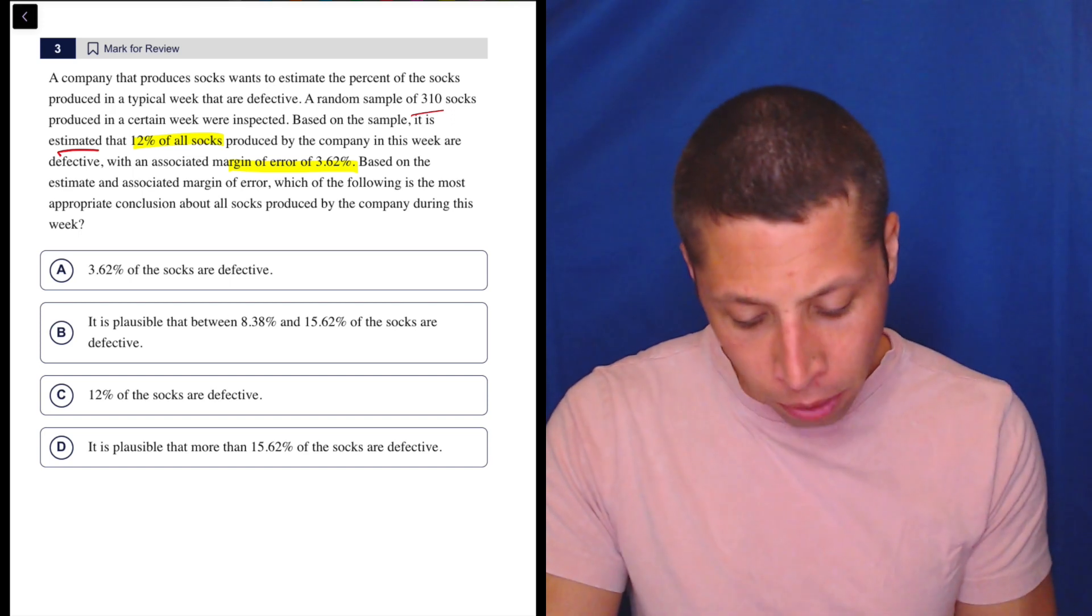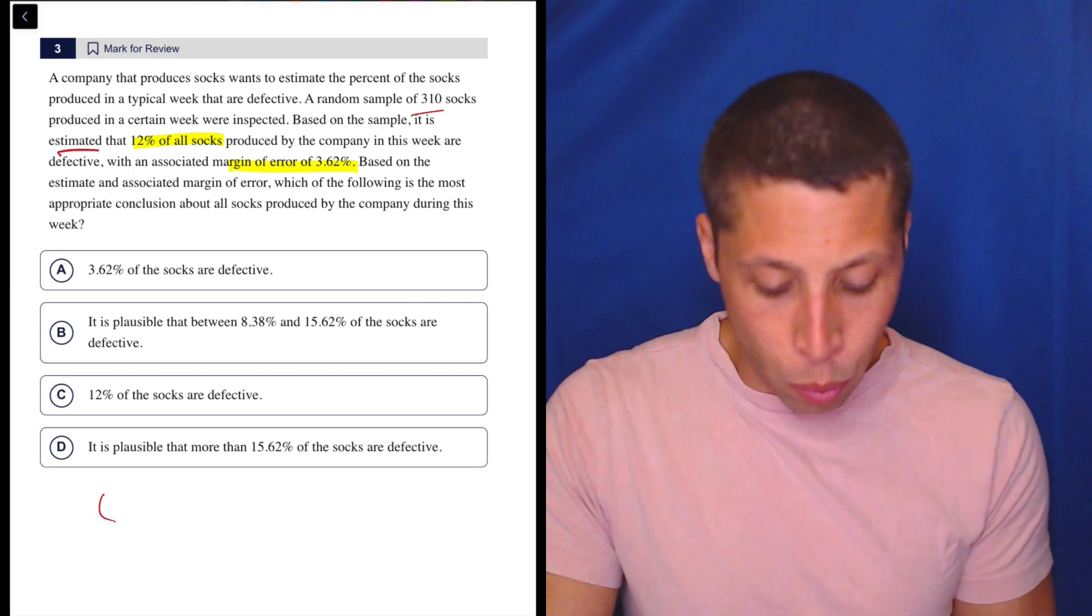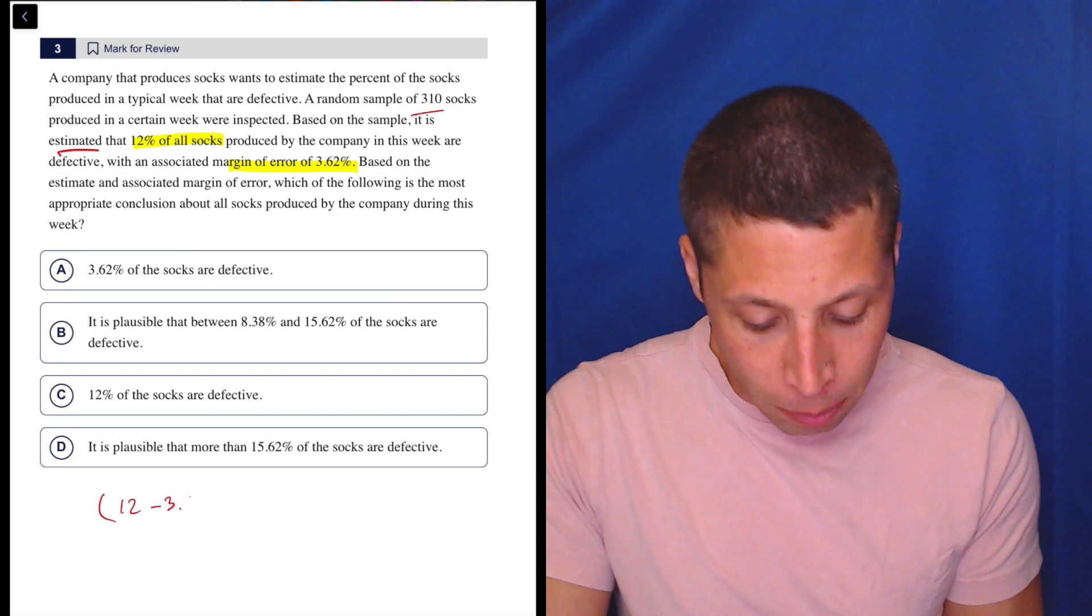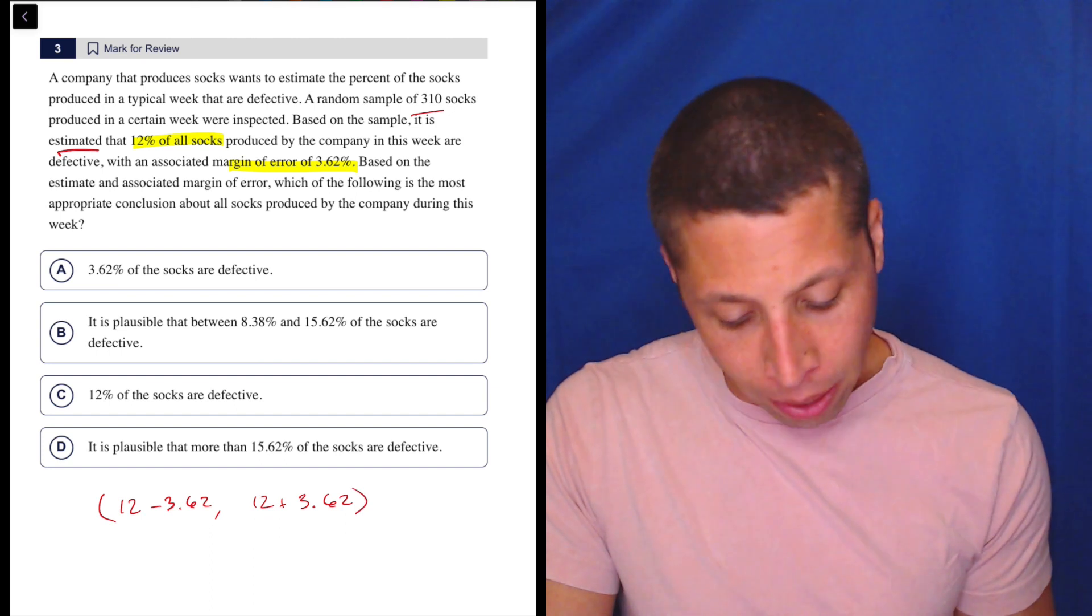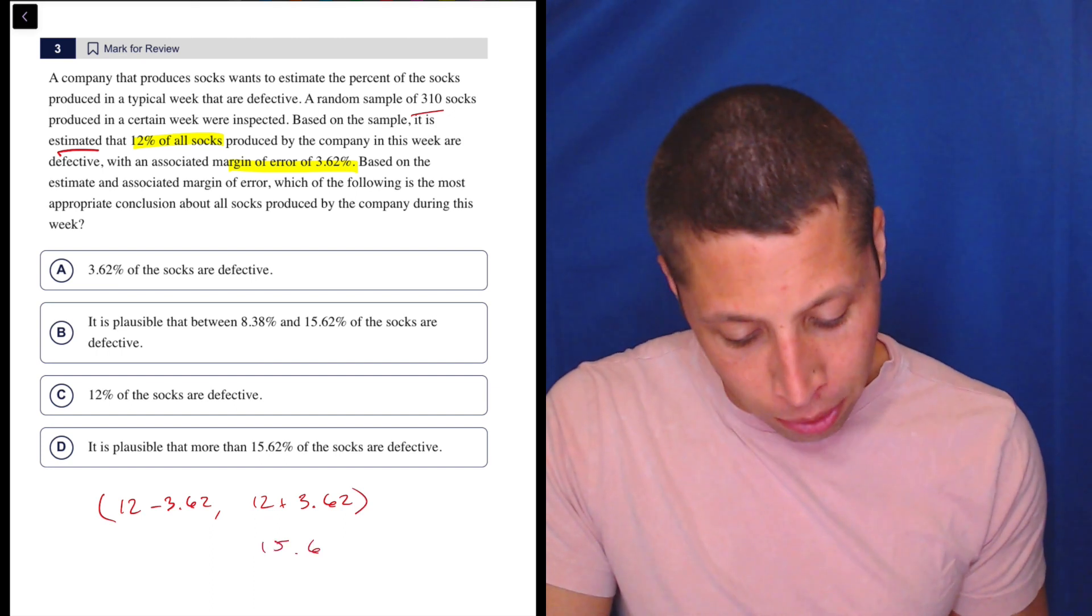So what we would do is we would take the 12 and we would say, let's do the 12 minus 3.62. Let's do the 12 plus 3.62 and see what we get. This one I can do easily, 15.62.